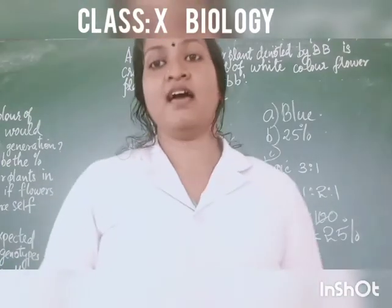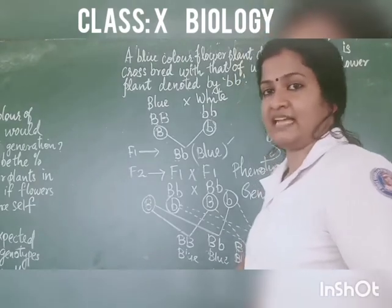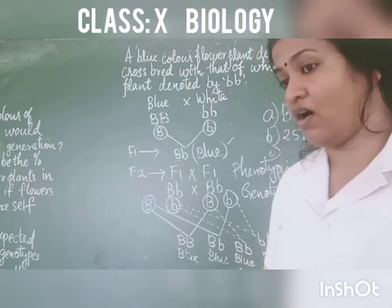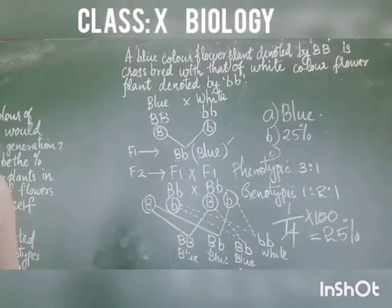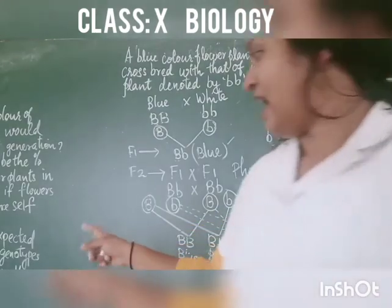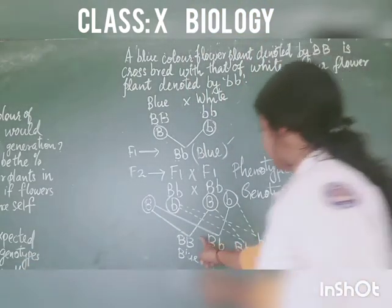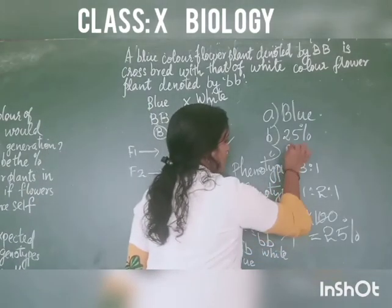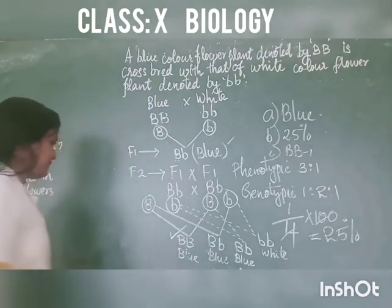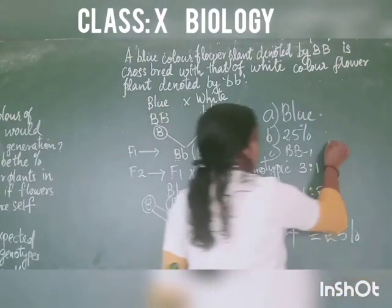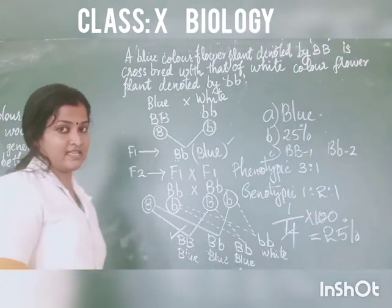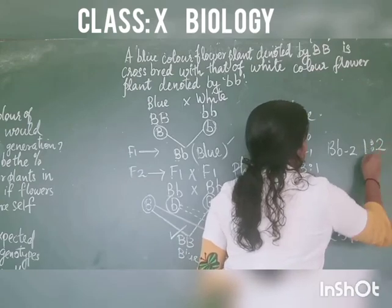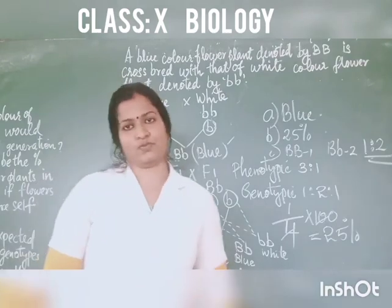For the last question: state the expected ratio of capital BB to capital B small b in the F2 generation. Capital BB plants — only 1 is there. Capital B small b plants — 2 are there. So the ratio is 1:2.